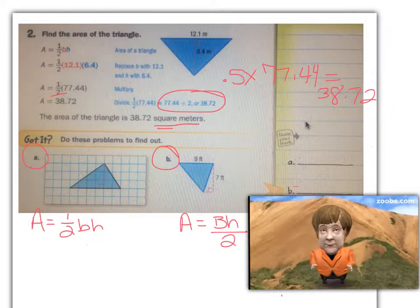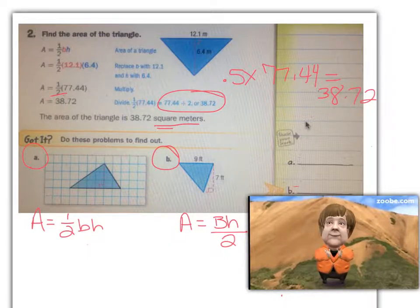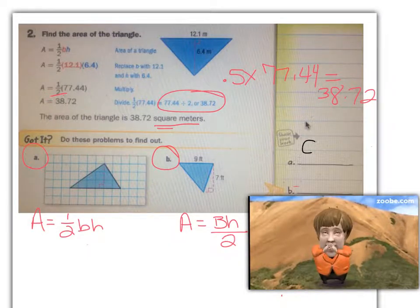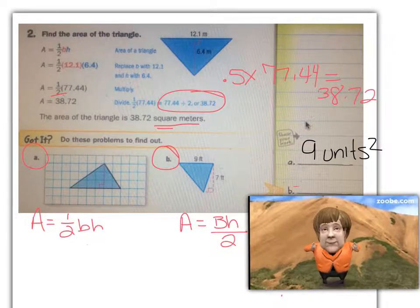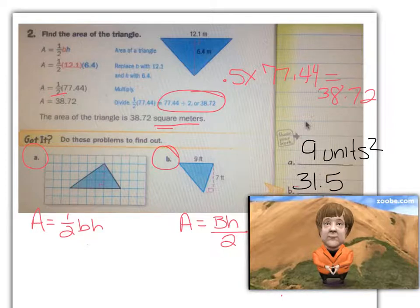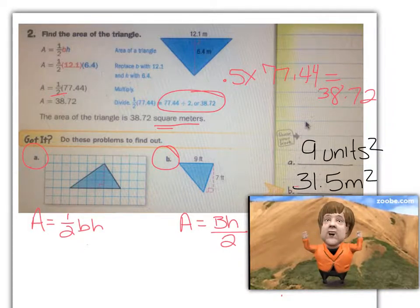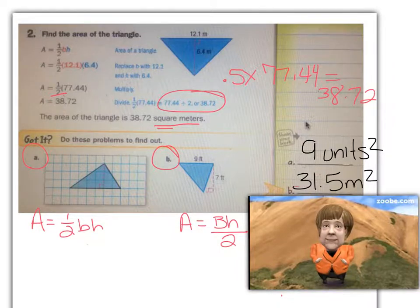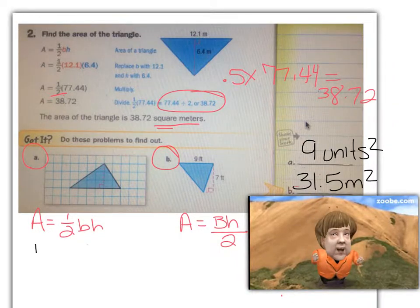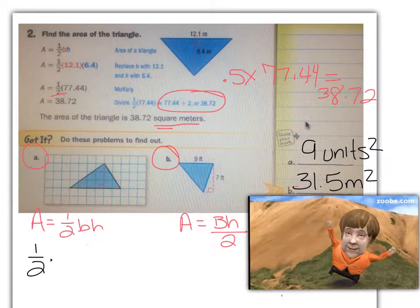Hi, I'm back, and I'm at a new mountain. Hopefully you got the same answers that I did for problems A and B. For problem A, the area of the triangle is nine units squared. For problem B, the area is 31.5 feet squared. Please watch to see how these were solved, and if you have any questions, please stop now and ask your teacher for more help.